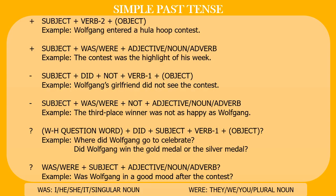For more detail, let's look at the following explanation. In simple past tense there are three types of sentences: positive, negative, and question. For each type there are two categories: verbal sentences and nominal sentences. For positive verbal, the example is 'Wolfgang entered a hula hoop contest' — the pattern is subject plus verb 2 plus object if needed. For positive nominal, which contains no main verb but uses a linking verb, the example is 'The contest was the highlight of this week.'